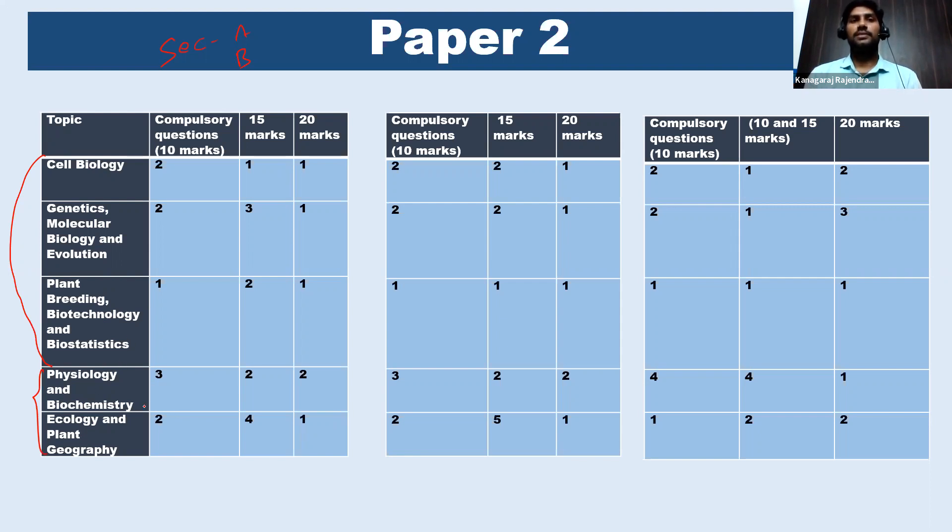So here, again, see, this topic is very important. So in paper two, we cannot skip the physiology and ecology part. So if we cover these two subjects, then we can attempt the maximum questions from section B. Instead of studying three subjects, if we cover two subjects thoroughly, fully, then we can attempt most of the questions from paper two, both compulsory questions as well as big questions.